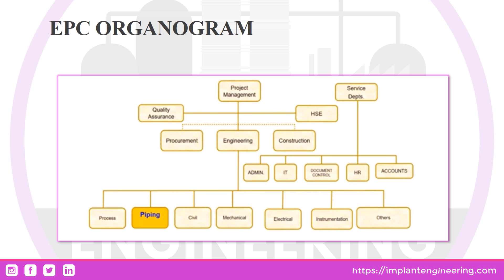The next thing is the EPC organogram. EPC stands for Engineering, Procurement, and Construction. Organogram refers to the hierarchy of project management. At the very top of the hierarchy is project management, with three sections under it: quality assurance, engineering, and HSE — which stands for Health and Safety Executive.